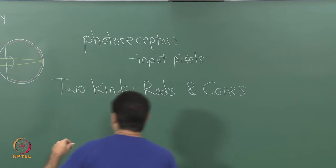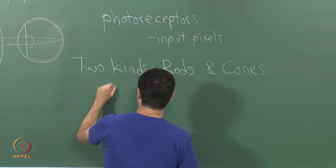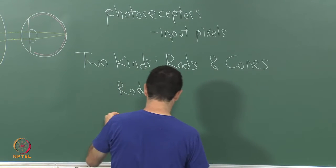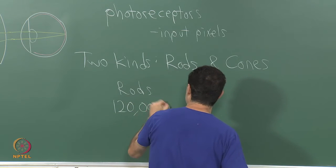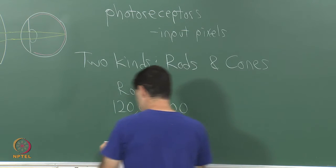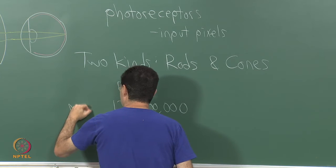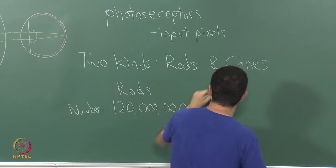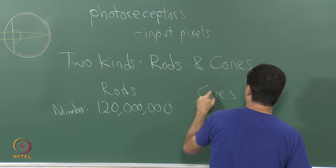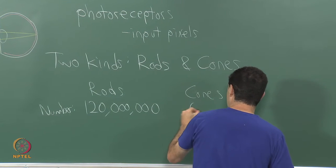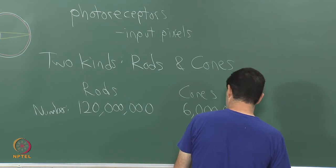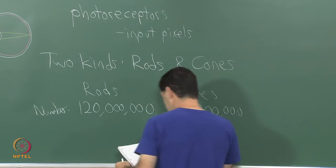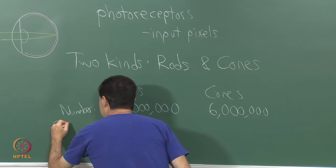Regarding rods, we have about 120 million per eye. For cones, we have far fewer, only about 6 million.